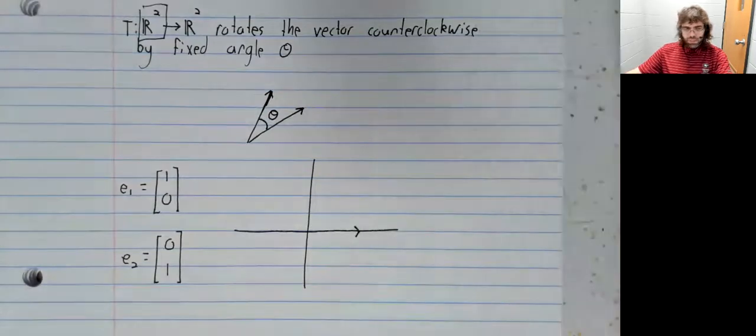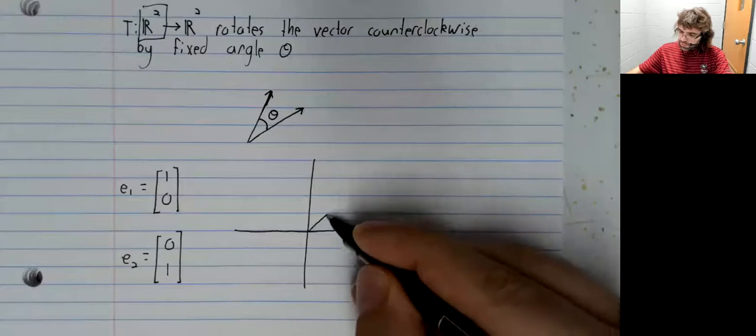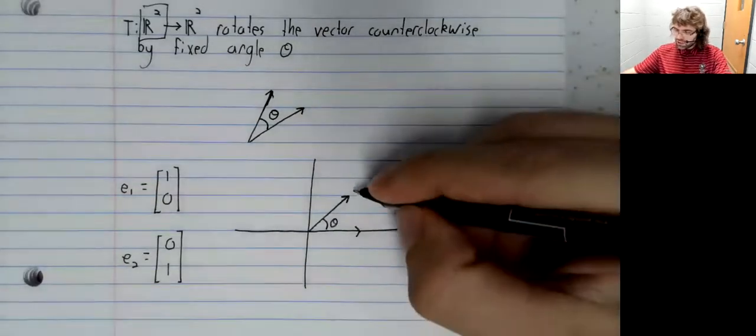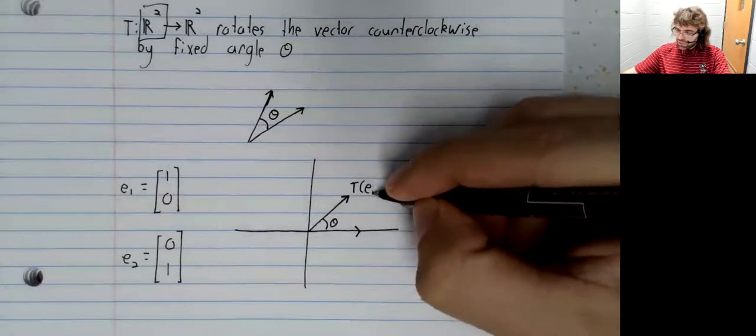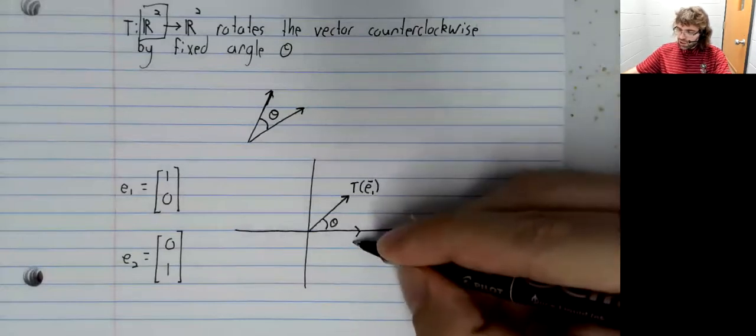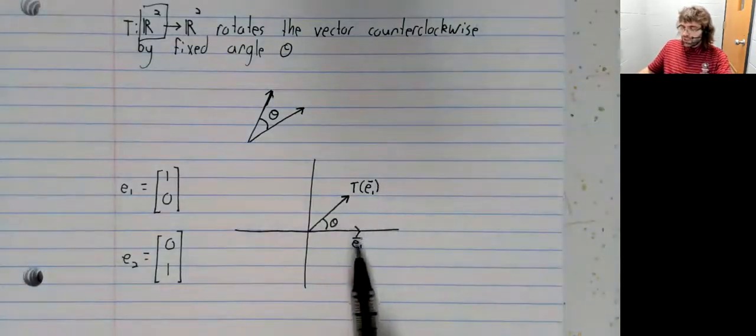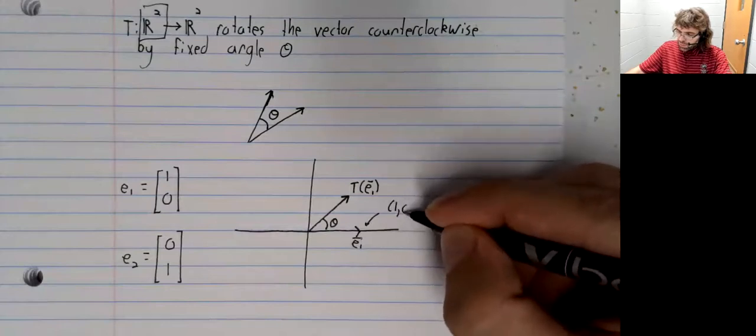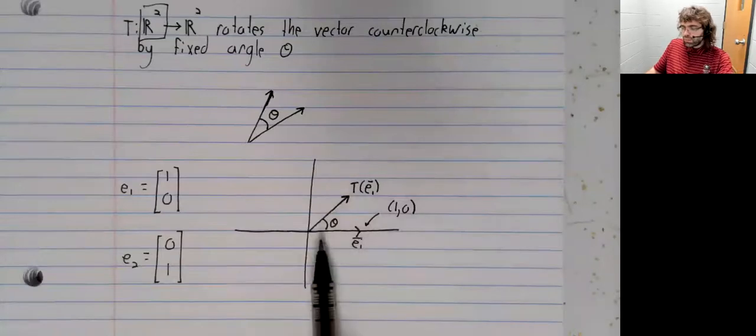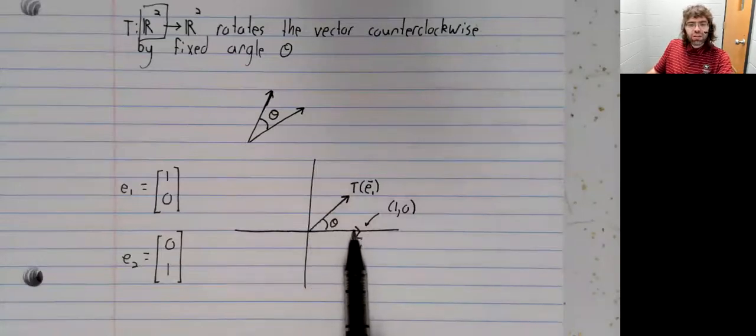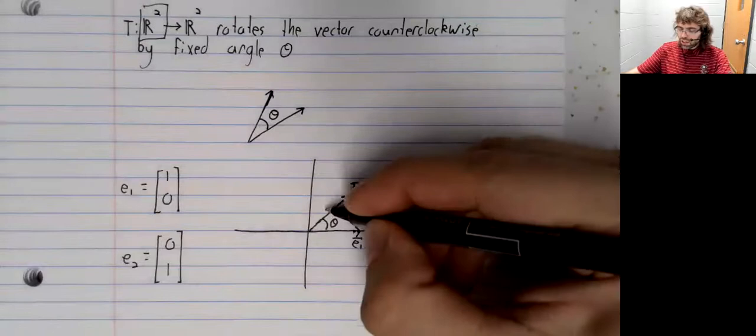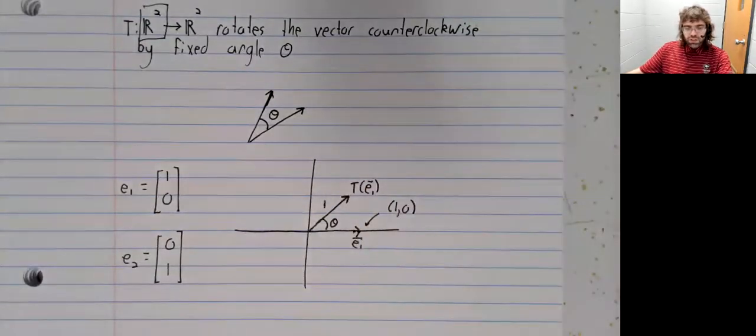Here is e sub one. And if this is theta radians, here is T of e sub one. Now, this is the point one, zero. This vector has a length of one and rotation doesn't change the length. So this vector has a length of one. What does that tell you?